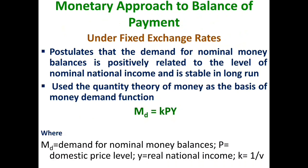Under a fixed exchange rate system, the demand for money function MD is assumed to be positively related to the level of nominal national income and is stable in the long run. The monetary approach uses the quantity theory of money to form its demand for money function: MD equals K times P times Y, where MD is the demand for money, P is the domestic price level, Y is the national income or output, and K is the parameter measuring the sensitivity of money demand to changes in income — in other words, K is the reciprocal of the velocity of circulation. Both V and K are assumed to be constant in the model.